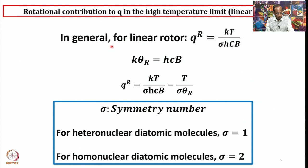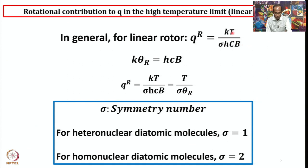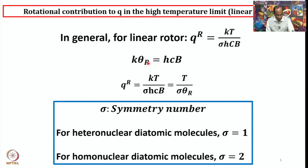For a linear rotor, we derived QR equals kT divided by σhcB, where σ is the symmetry number, k is the Boltzmann constant, h is Planck's constant, c is the speed of light, and B is the rotational constant where B equals h-bar divided by 4πcI, and T is temperature. We also introduced the importance of rotational temperature — this equation is valid if the temperature is higher than the rotational temperature.